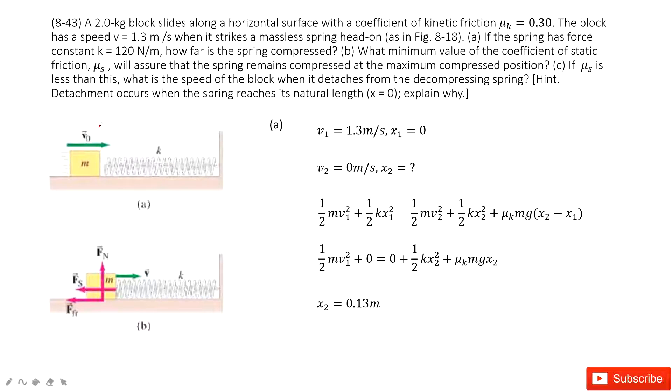You can see at the initial position there, we have the box just attached with the spring. So x1 is 0. It's at the balance position. The initial velocity is given, 1.3 m per second.